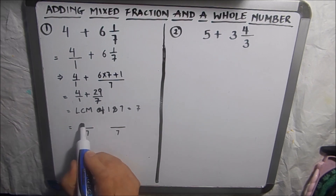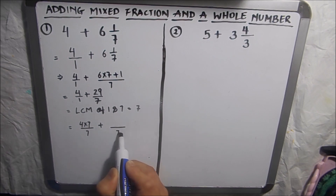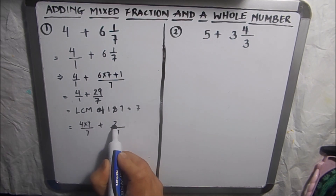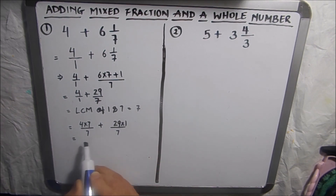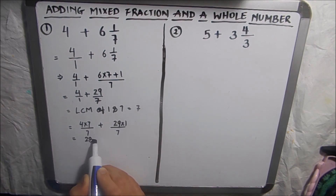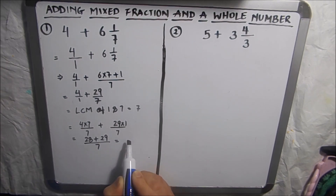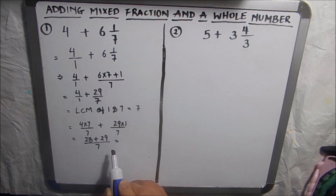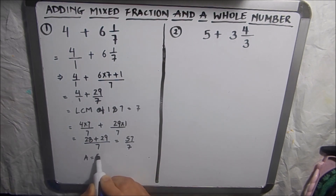Now we will write the fractions using the common denominator, which is 7. So we multiply the numerator of 4 over 1 by 7, giving us 28, and 29 over 7 stays as is. So we get 28 plus 29 over 7, which is 57 over 7. So our answer is 57 over 7.